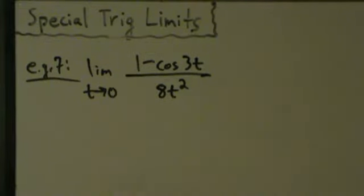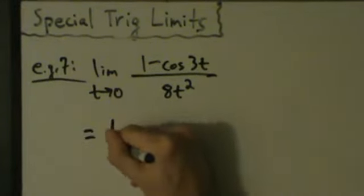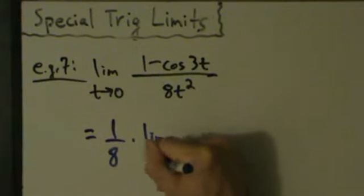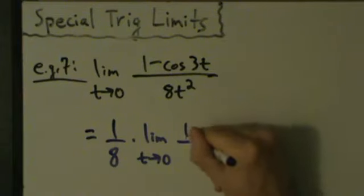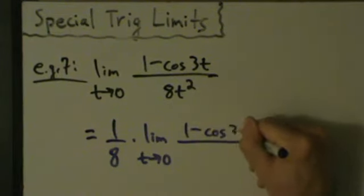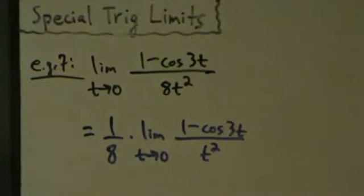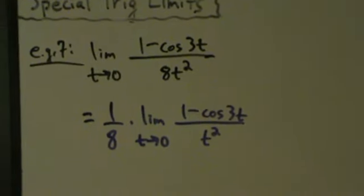Let's start by pulling out the 8 from the bottom. Because it's on the bottom, it becomes 1 eighth. So this equals 1 over 8 times the limit as t approaches 0 of 1 minus cosine of 3t over t squared.